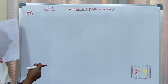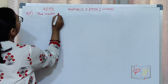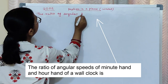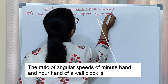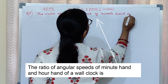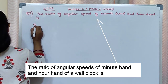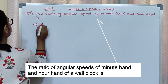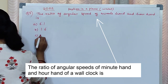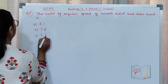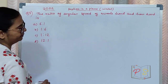The ratio of angular speed of the minute hand and hour hand. Look at your options: A is 6 is to 1, B is 1 is to 6, C is 1 is to 12, and D is 12 is to 1.